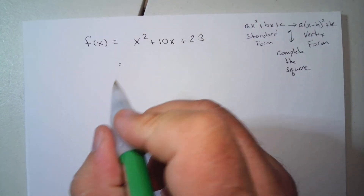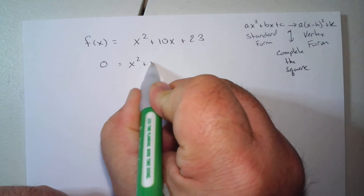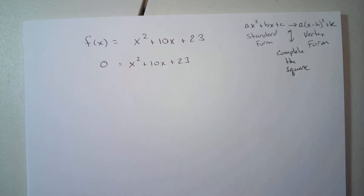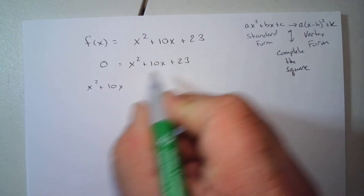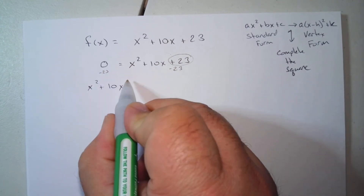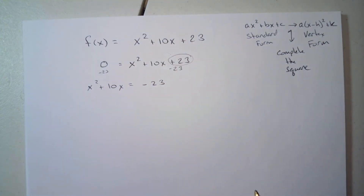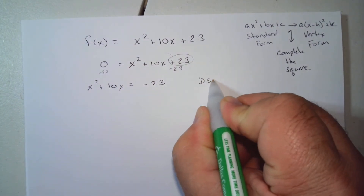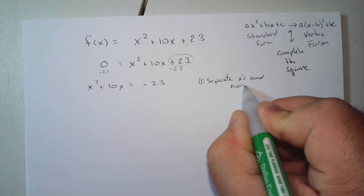Set this equal to zero: x squared plus 10x plus 23 equals zero. The first step is to separate the letters from the numbers — separate x's and non-x's — so we subtract 23 from both sides, giving us x squared plus 10x equals negative 23. Second step: make sure a equals 1. In our case, yes it is.